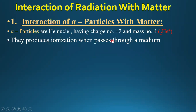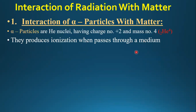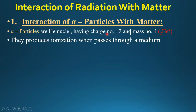Alpha particles produce ionization when they pass through a medium, whether it is gas or liquid. They do this in two ways: one is by direct collision — being a very heavy particle, they collide with atoms or molecules and remove electrons from them. The other way is through their charge of plus two, which attracts and removes electrons from neutral atoms, causing ionization.